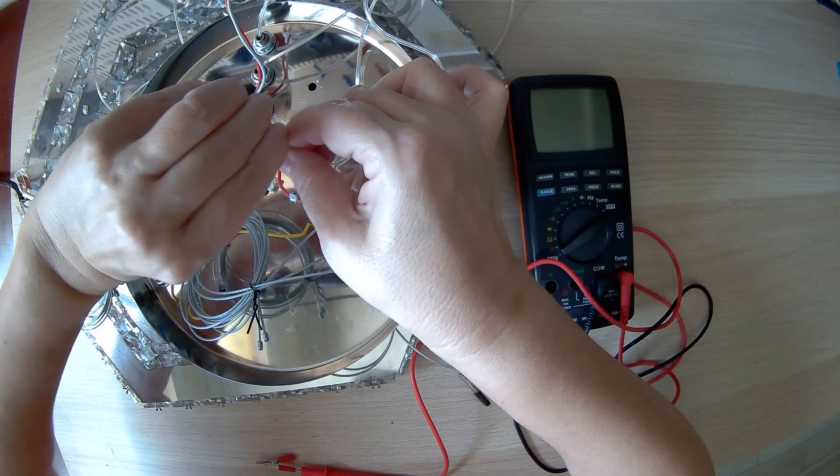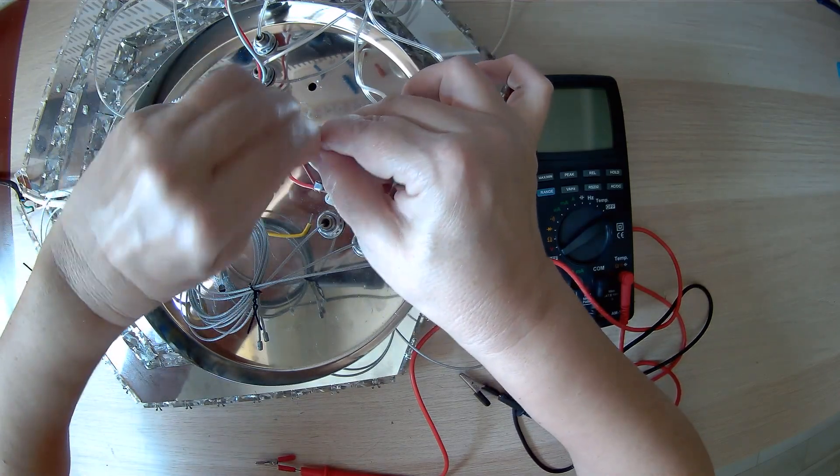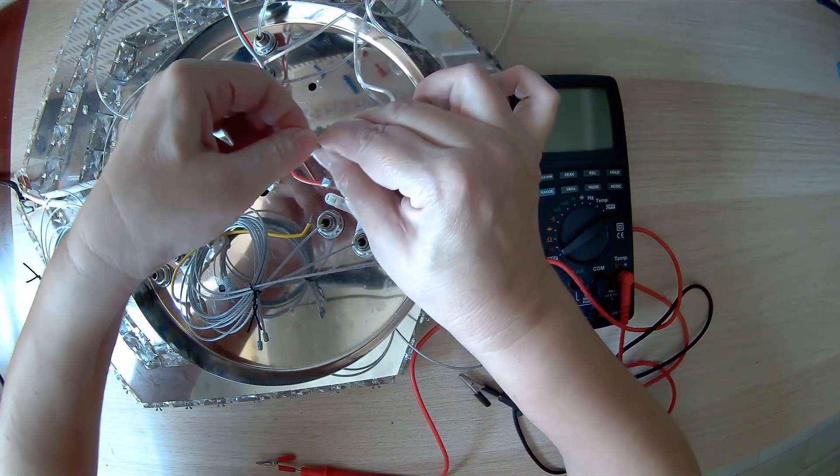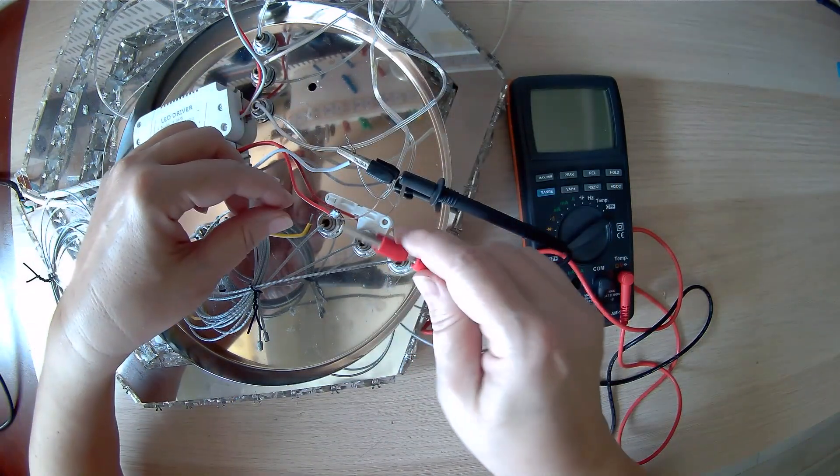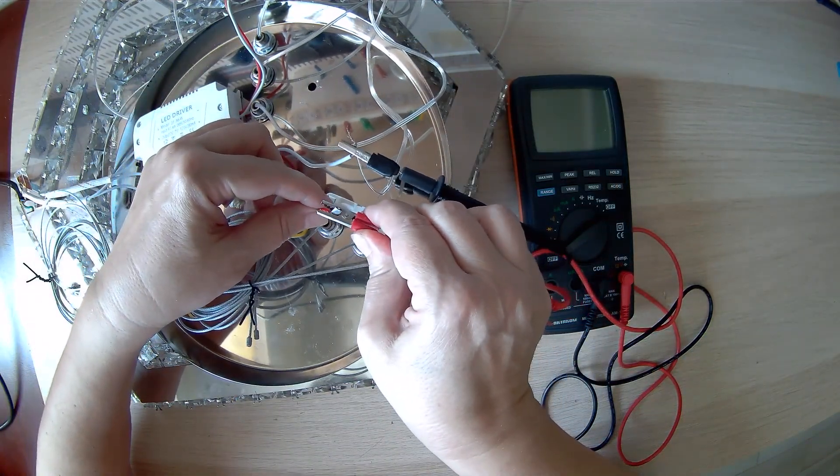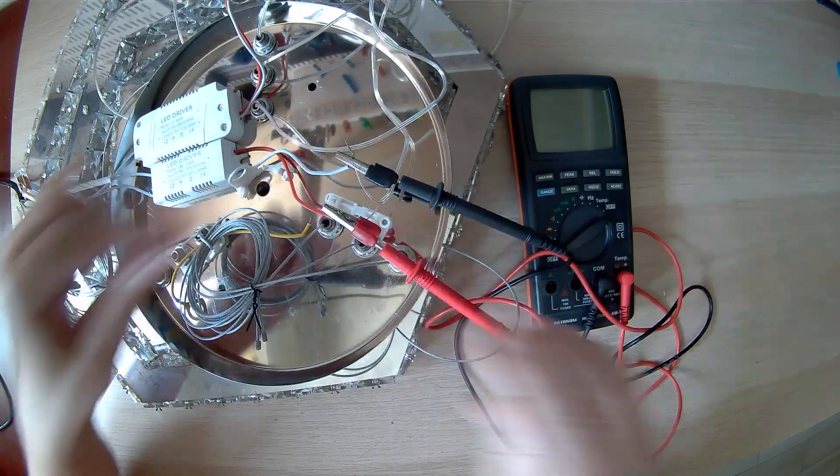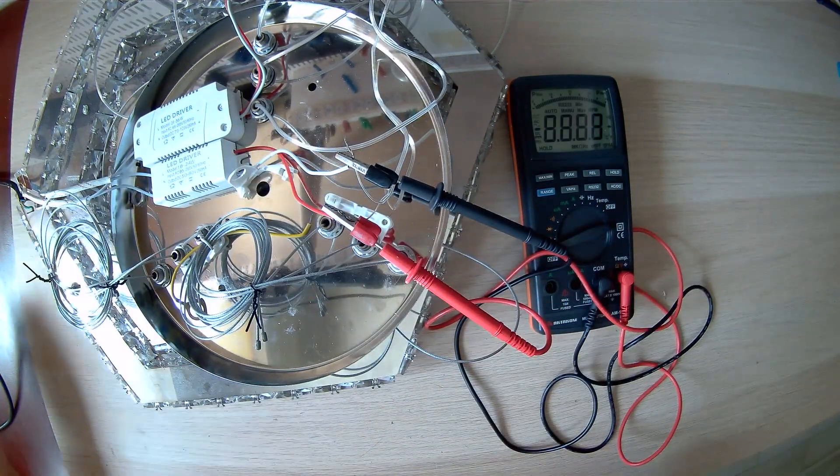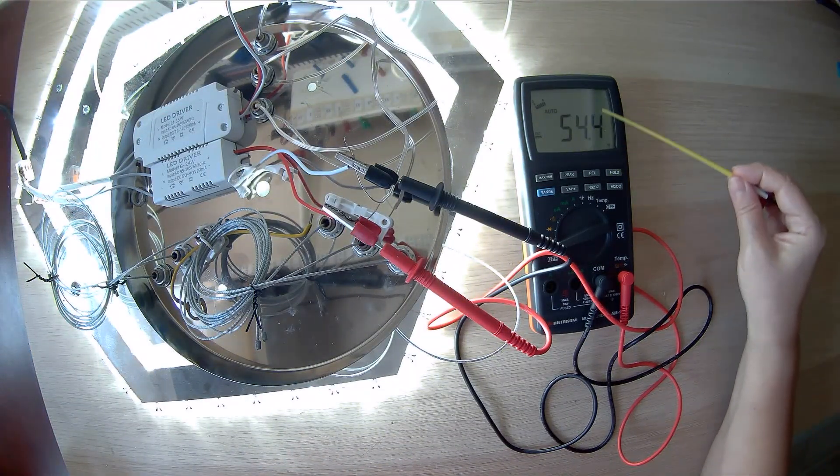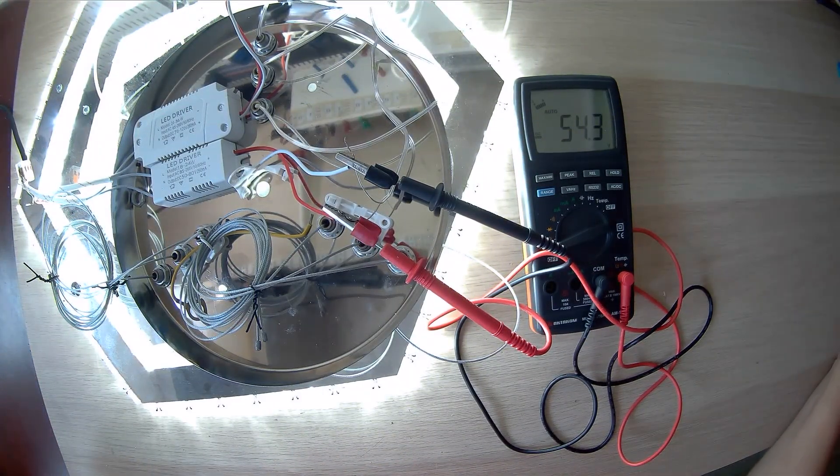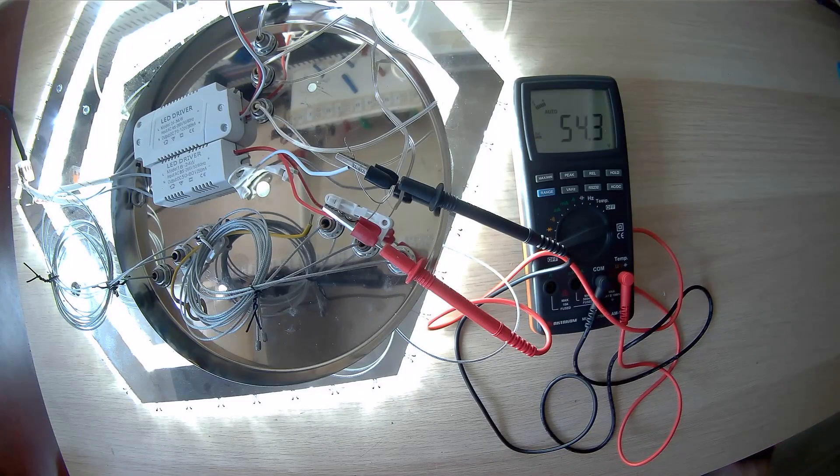Let's connect the middle level of the LED chandelier directly to the driver and check the voltage. For this we use the AM1060 multimeter. Let's turn on the power. We see that the average level voltage of the LED chandelier is 54 volts, which is exactly what is needed for normal operation of the middle section.